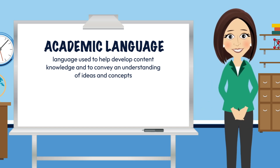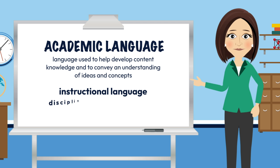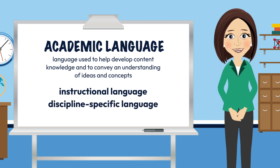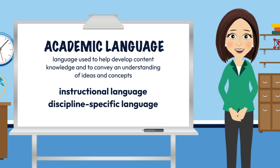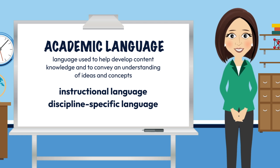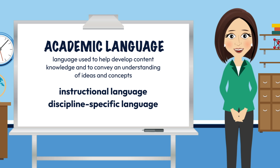We then identified the two kinds of academic language as instructional language and discipline-specific language. Instructional language is the language of teaching — language that gets students thinking about and engaged in new information. Discipline-specific language is the specialized language of vocabulary, syntax, etc., specific to a discipline or topic of study.